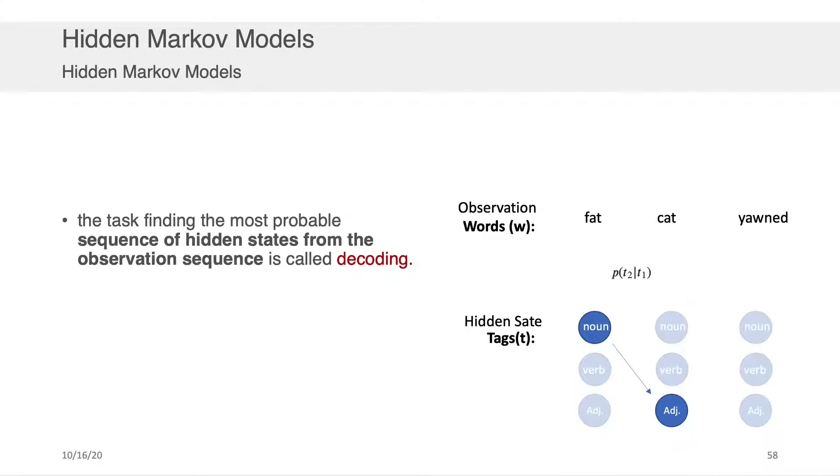So decoding algorithms are meant to try to help with that process. More specifically, a decoding algorithm is trying to find this optimal sequence of tags, T1, T2, T3, which in this case is an adjective for fat, a noun for cat, and verb for yawned. It's trying to find this in a more computationally effective way than just brute force searching every possible configuration within your Markov model.